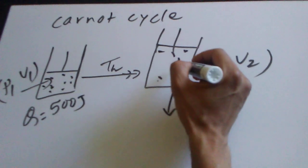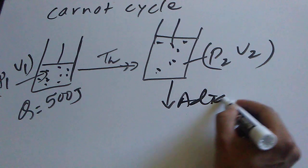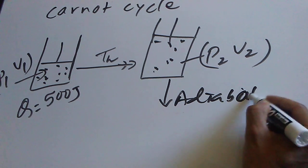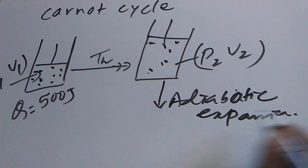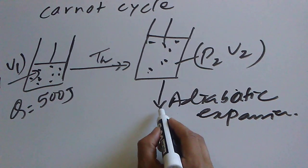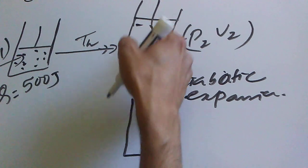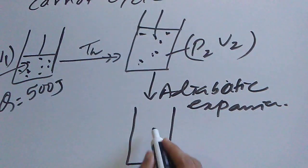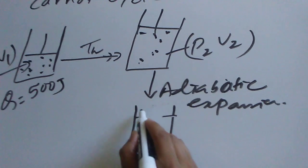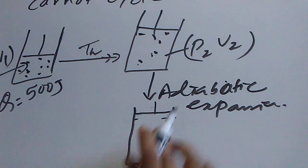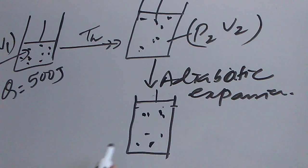After that, we allow the gas to expand a little bit by an adiabatic process — adiabatic expansion. During this adiabatic expansion, the gas uses its own internal energy and pushes the piston upward.